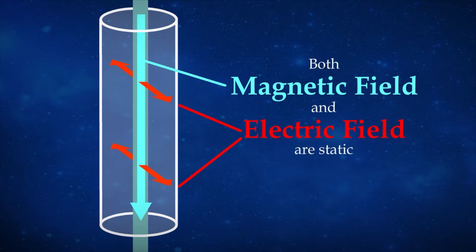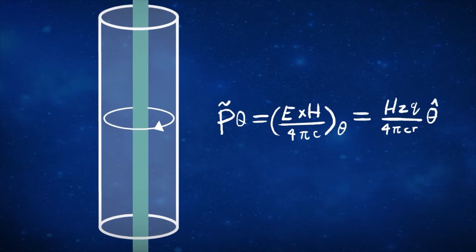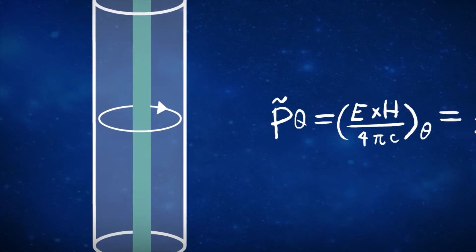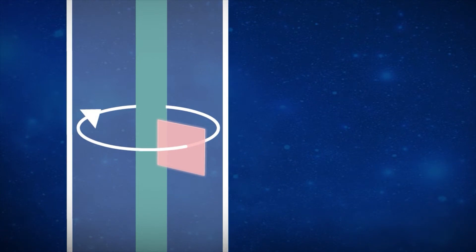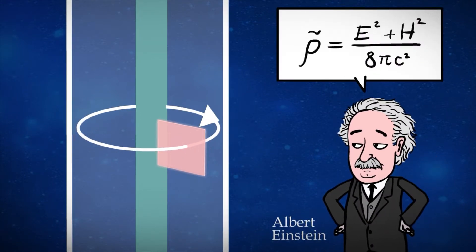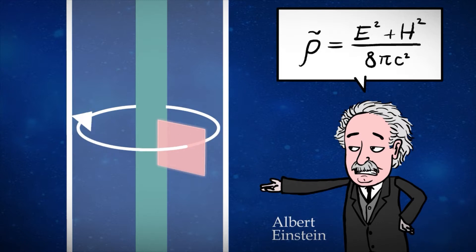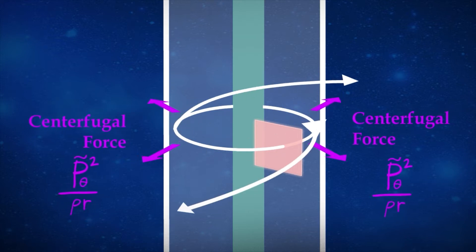Both fields are static. A simple calculation shows that the field's momentum is turning in the theta direction according to the Poynting vector, and there has to be a momentum flux flowing in that direction. According to Einstein, any electromagnetic field has mass density. Therefore, the fields should experience centrifugal force, just like the case of fluids and gas with rotational momentum.